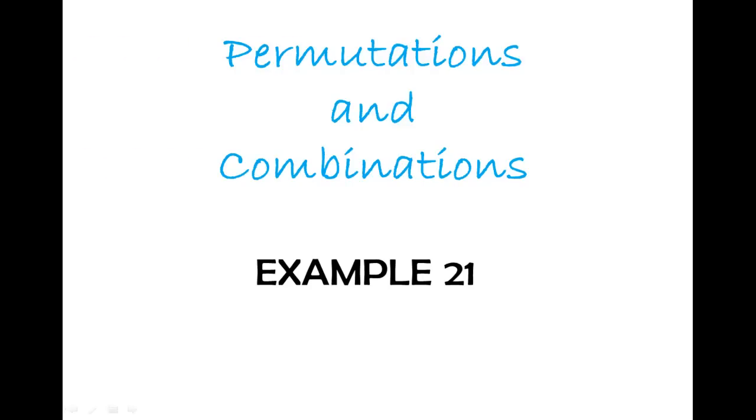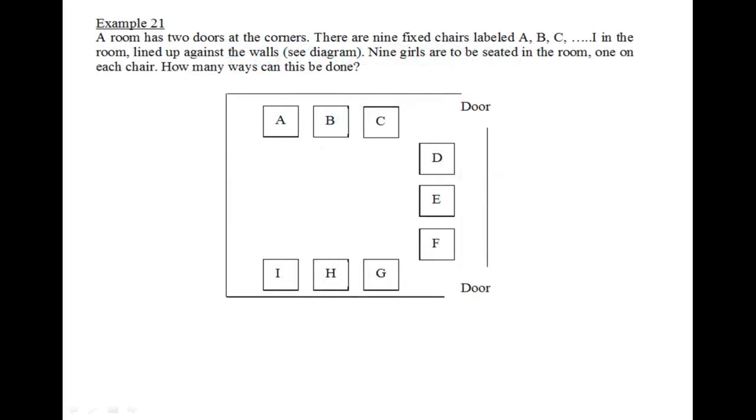Let's look at example 21. A room has two doors at the corners, right over here and here. There are nine fixed chairs labeled A, B, C up to I in the room, lined up against the wall. Nine girls are to be seated in the room, one on each chair. How many ways can this be done?